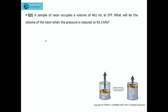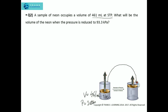The second question: read the question properly. A sample of neon occupies a volume of 461 milliliters at STP. STP stands for standard temperature and pressure, and we take the pressure as 1 atmosphere. What will be the volume of the neon when the pressure is reduced? The new pressure becomes 93.3 kilopascal, and we have to find the volume corresponding to this reduced pressure.